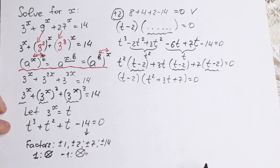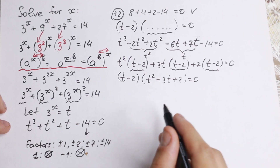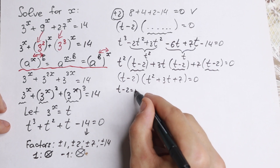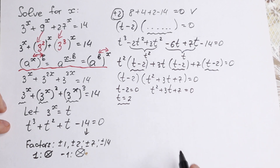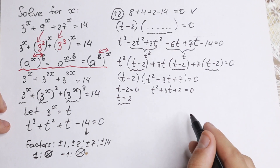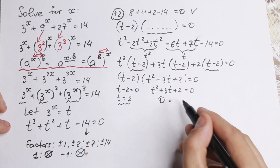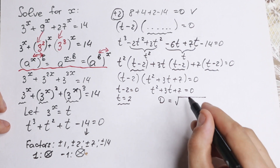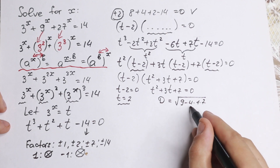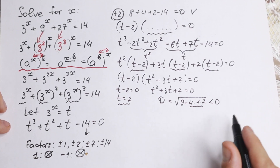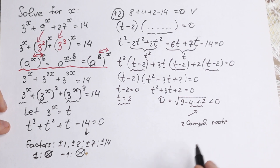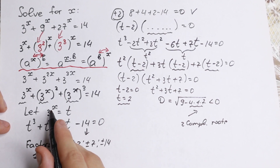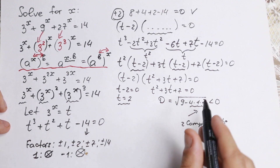We've fully factored the cubic. Setting t minus 2 equal to zero gives t equals 2 as our first root. For the second factor, t squared plus 3t plus 7 equals zero. The discriminant is b squared minus 4ac, which equals 9 minus 28, giving a negative discriminant. So this factor yields two complex roots.